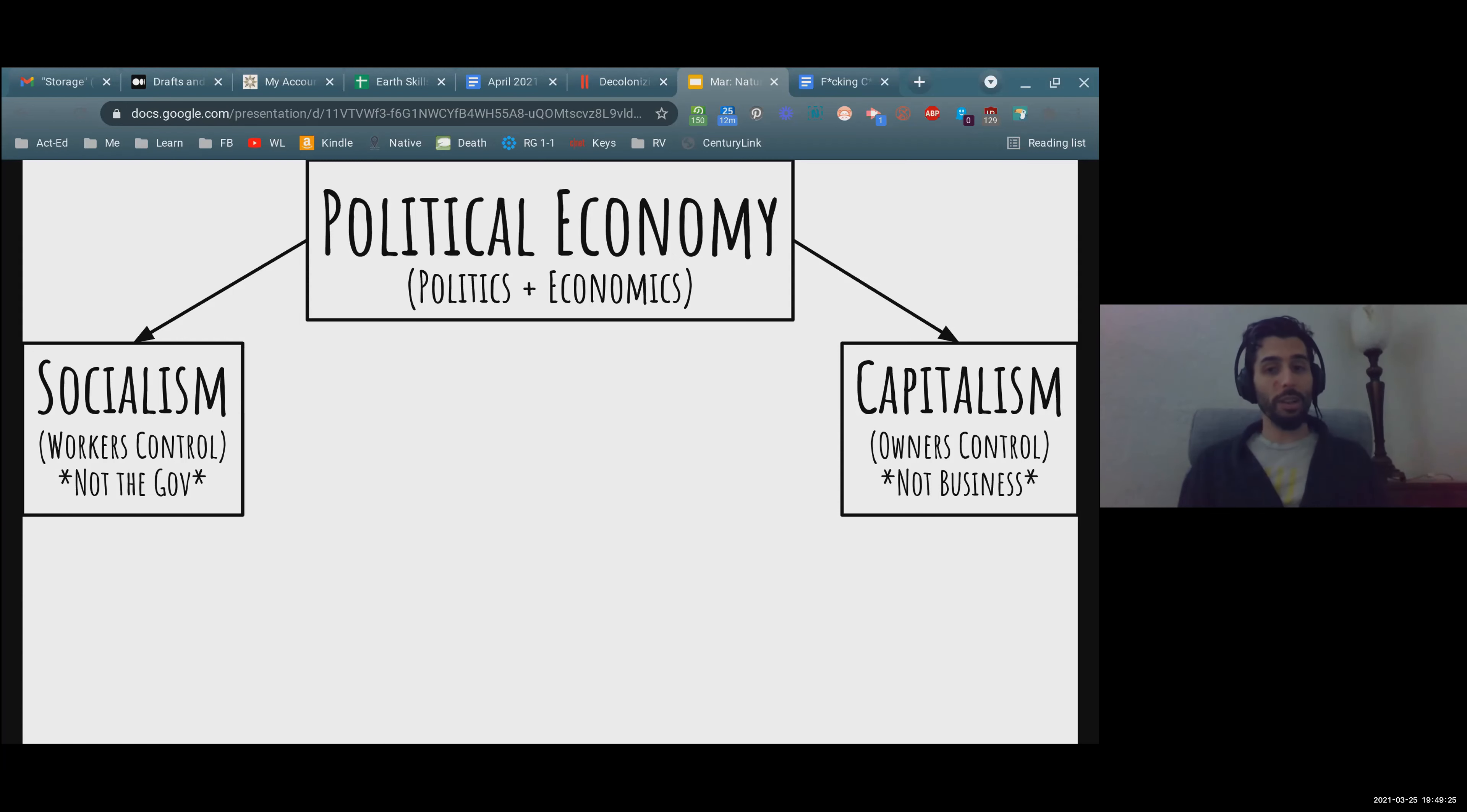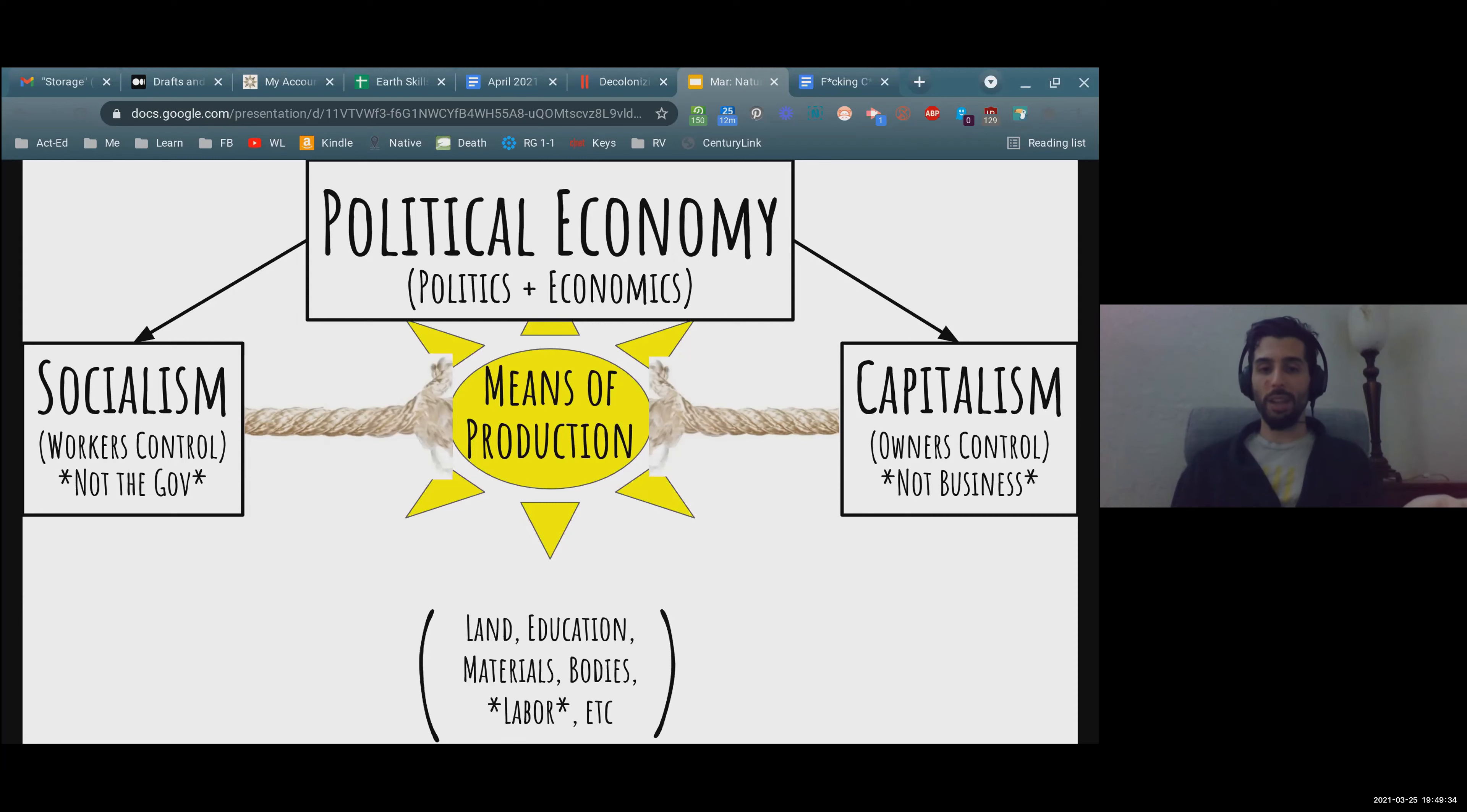Socialism being when the workers control and capitalism being when the owners control. I want to emphasize here that socialism is not just anything the government does. There's a lot of things the government does that socialists do not like. Capitalism is not anything that businesses do. There's a lot of things businesses do that capitalists don't like or pro-capitalists don't like anyway. And we'll get into that. But you can have a socialist business and you can have a capitalist government. In fact, here in the United States, we do. What determines whether it is socialism or capitalism is who is in control, who has power. And that is workers versus owners. And what are they controlling? It's always a tug of war over the means of production. That's key. What are means of production? Examples include land, education, materials, bodies, labor, a key one, et cetera.